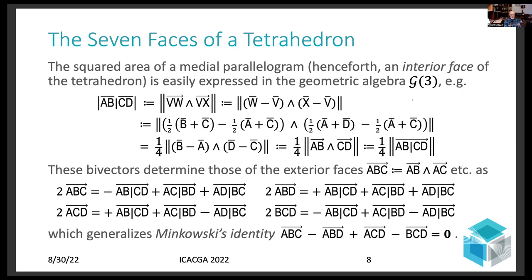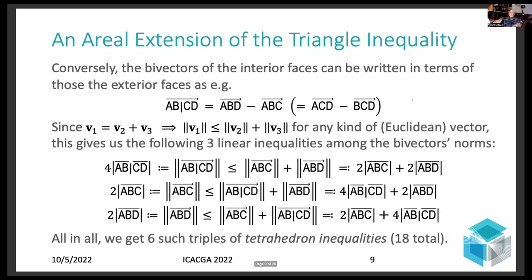I'm going to denote that, or that can be written as the vector from A to B wedge with the vector from C to D. And as a shorthand, I'll be denoting that bivector by that last formula shown there. And what you can show via fairly straightforward manipulations is that the bivectors of the exterior faces of the tetrahedron are related to those of the interior faces, as I call these medial parallelograms, by simple sign sums, as shown here. These are, in fact, a generalization of the very well-known Minkowski's identity, which is a linear relationship among the bivectors of the four faces of a tetrahedron, as it's been known for well over a century now. In fact, it was probably known to Grassmann.